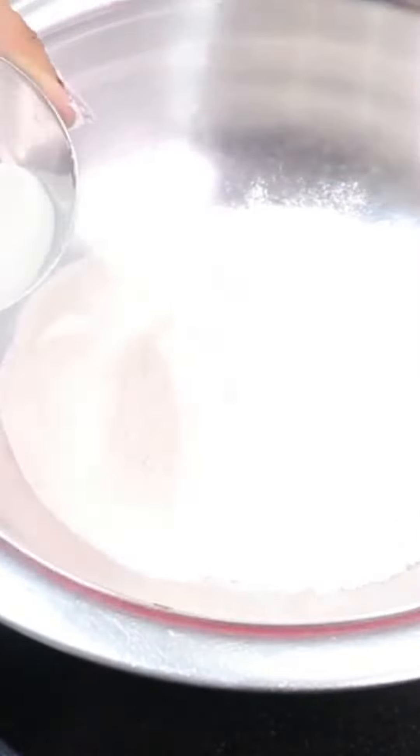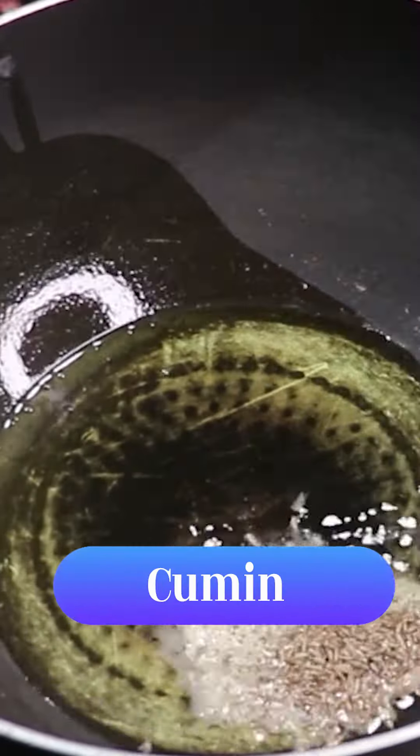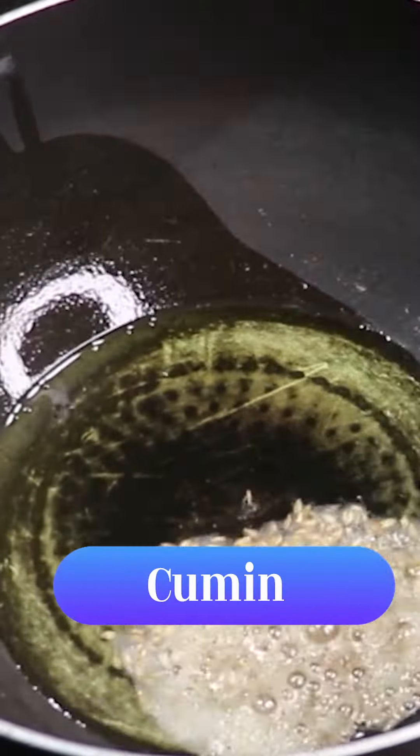First of all, we'll add a kattori atta, a kattori suji, ajwain, a little ghee, and salt, and we'll mix it as you can see. We'll add a little ghee so it won't dry.